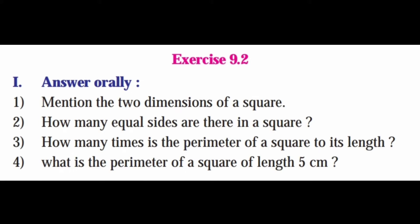Now we will see Exercise 9.2. First, answer orally. Question 1: mention the two dimensions of a square — it has length and length. Question 2: how many equal sides are there in a square? All sides are equal; it has 4 sides. Question 3: how many times is the perimeter of a square to its length? 4 times. Question 4: what is the perimeter of a square of length 5 centimeters? 4 times 5 equals 20 centimeters.